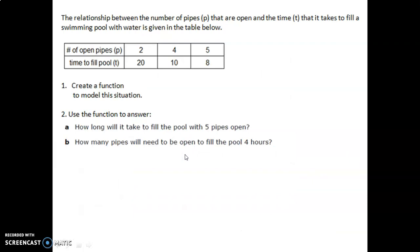Let's look at a problem to bring us back to what reciprocal functions look like before moving on. We have a situation where pipes are open in a swimming pool letting water in. As we have more pipes open, it takes less time to fill the pool. More pipes letting in more water takes less time in total. Let's create a function for this situation.